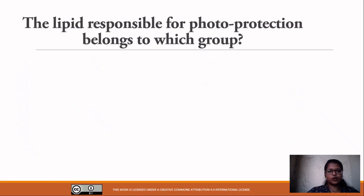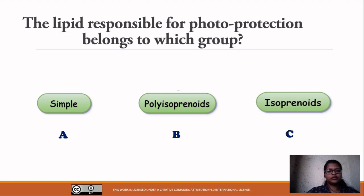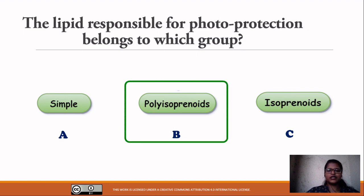Question number three: The lipid responsible for photo protection belongs to which group? The answer is carotenoids — and carotenoids belong to the polyisoprenoids group, because they contain more than one isoprene unit.